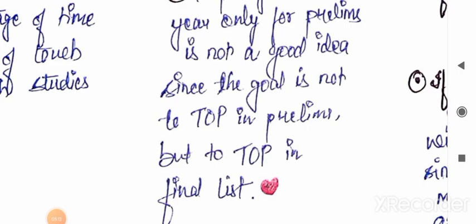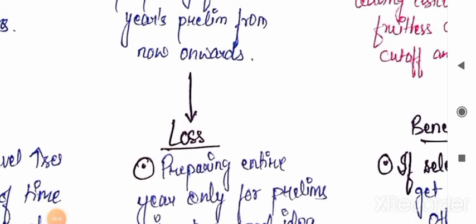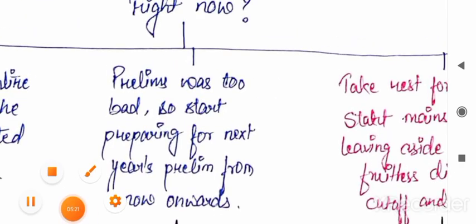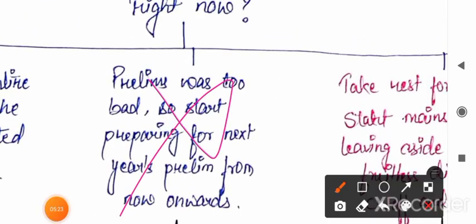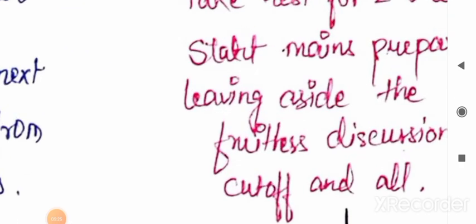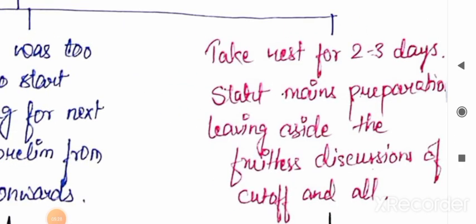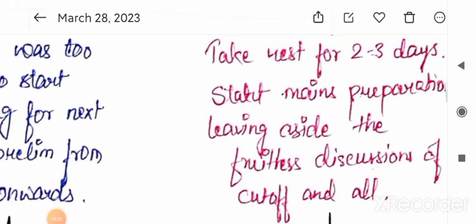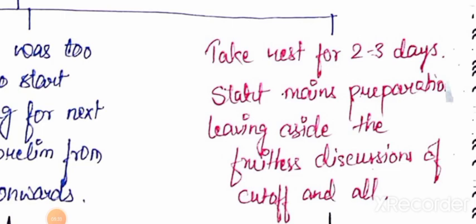Since the goal we have is not to top in prelims, we need to secure our name in the final list, not only in the prelims list. Mains is the ultimate game, so focus should be more on that. Prelims-specific preparation should happen only 3-4 months before prelims. Before that, mains preparation should happen. So this second option is also not good for us.